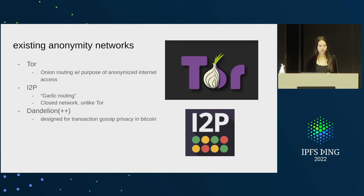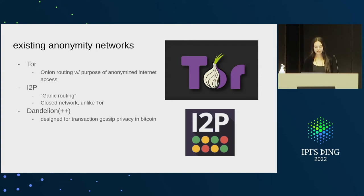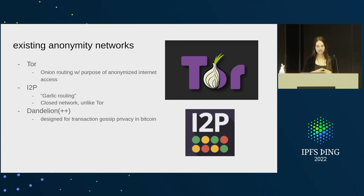Then there's I2P, the Invisible Internet Protocol, which is different from Tor in that it's P2P. It's a closed network where you only access things inside the network. It uses garlic routing in addition to onion routing, so it does some message bundling as well. Unfortunately I2P isn't as widely used as Tor and there hasn't been much research on it. And there's Dandelion and Dandelion++, designed specifically for transaction submission privacy — it's used in Monero and is a method for gossiping transactions in a way that preserves privacy. It was designed specifically for blockchains.